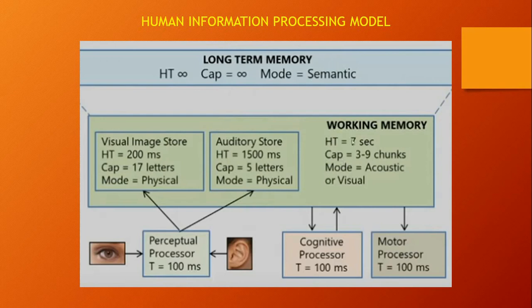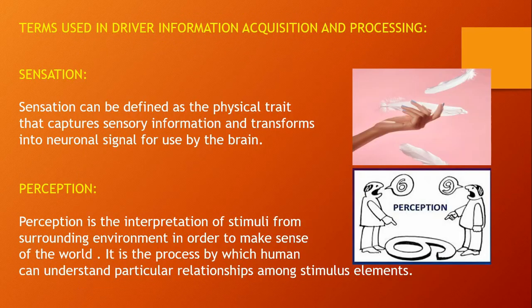The information gathered from the perceptual processor is taken by working memory, and based on that it is moved to long-term memory, which is permanent. If stored in long-term memory, the information is not erased throughout the individual's lifetime. Meanwhile, the cognitive processor captures information and the motor processor delivers the required action to be done based on the information gathered.